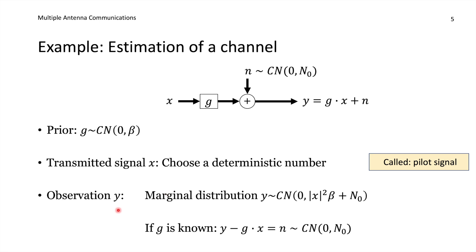For the observation y, we can characterize its marginal distribution. Since y is a sum of g, which is complex Gaussian, and n, which is complex Gaussian, and they are independent, y is also complex Gaussian with zero mean and variance equal to beta times the absolute value squared of x plus n0. It is also easy to characterize the distribution of y when g is known: subtracting g times x leaves only the noise, so y minus gx is complex Gaussian with variance n0. This gives us the conditional distribution of y given g.